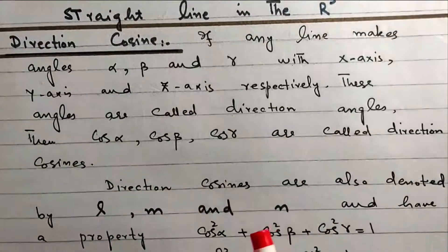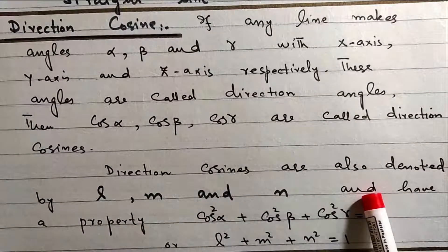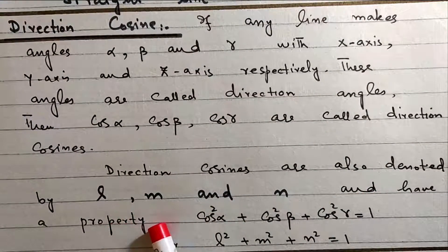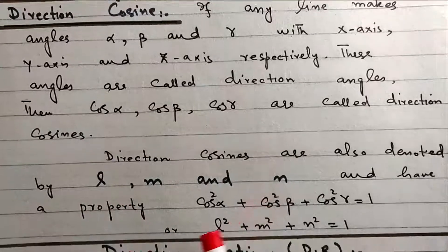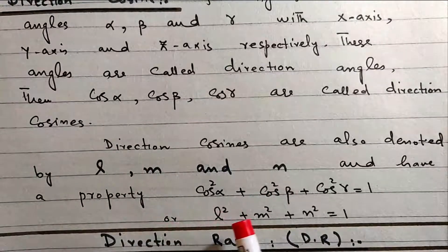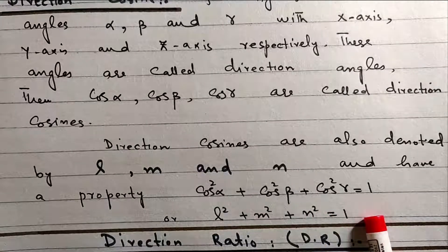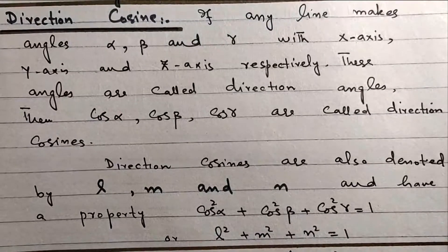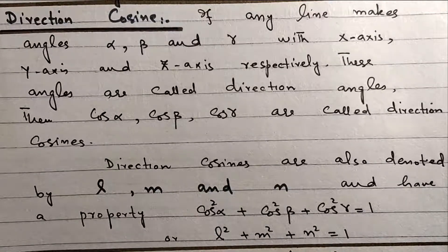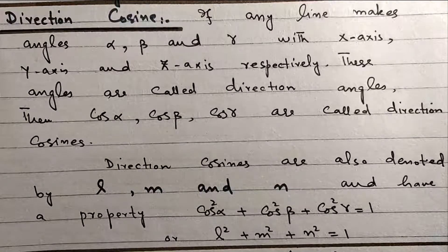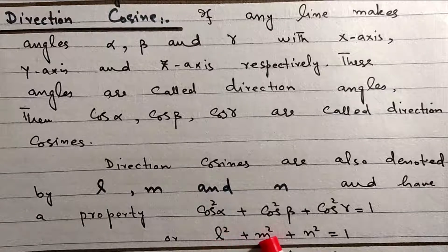Direction cosines are also denoted by L, M, and N, and have the property: cos²(alpha) + cos²(beta) + cos²(gamma) = 1, or equivalently L² + M² + N² = 1. That is, the sum of squares of direction cosines is equal to 1.